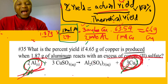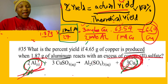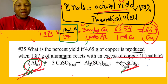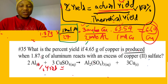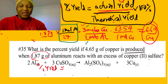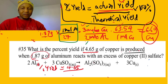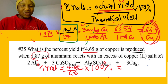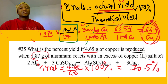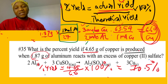Now we plug back into the percent yield formula. The actual yield is 4.65 grams and the theoretical yield is 6.6 grams. Percentage yield = 4.65 / 6.6 × 100% = 70.5%. So the percentage yield for this experiment is 70.5%.